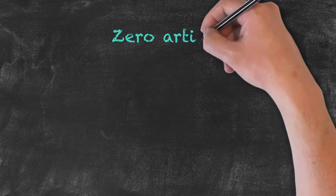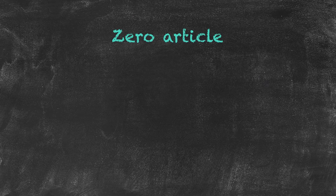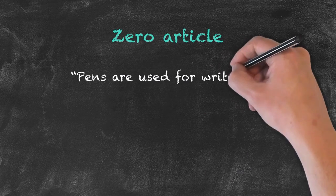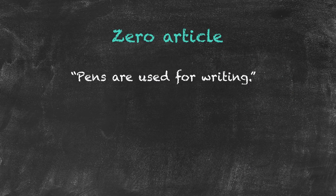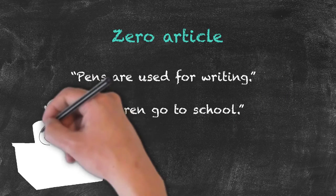With the zero article, we don't use an article at all. We use it to talk about things in general or when we talk about all things together. So here I would simply say: 'Pens are used for writing,' or 'Children go to school.'